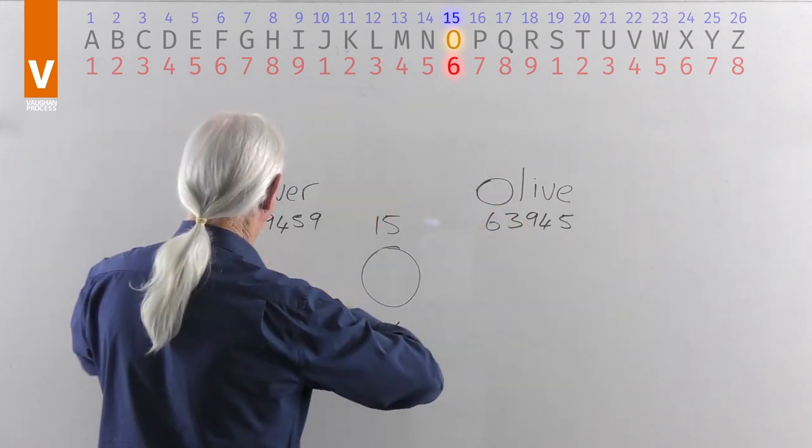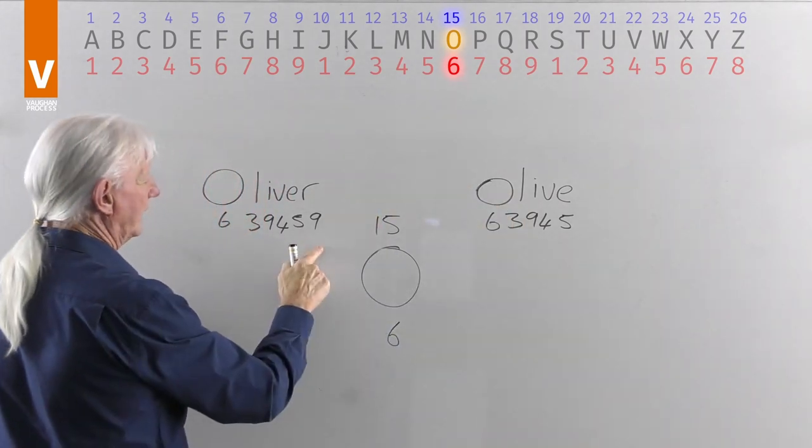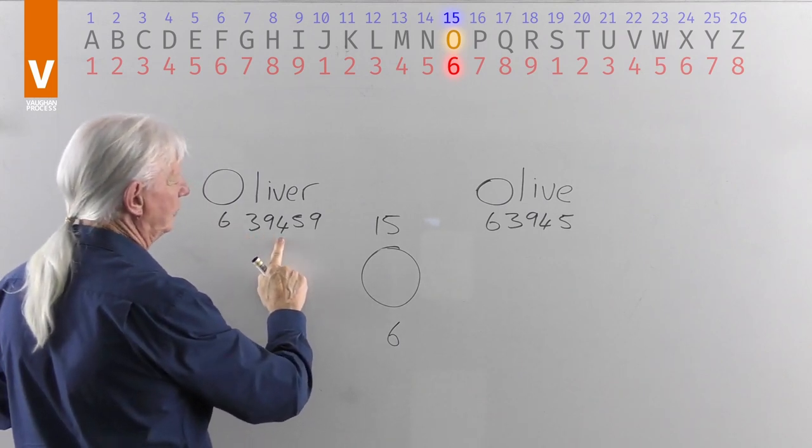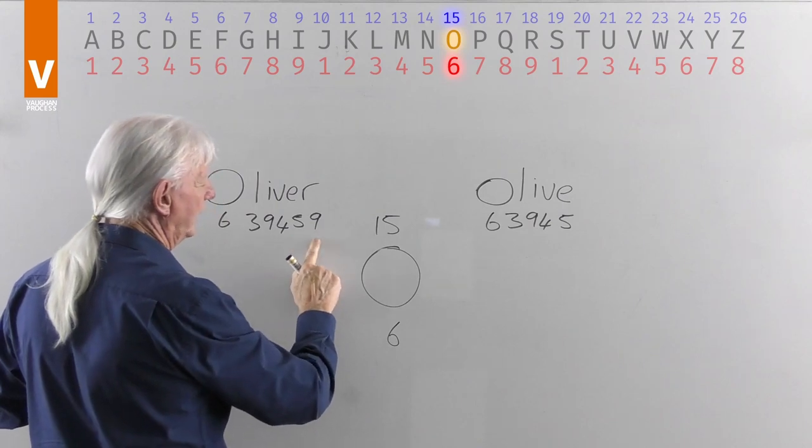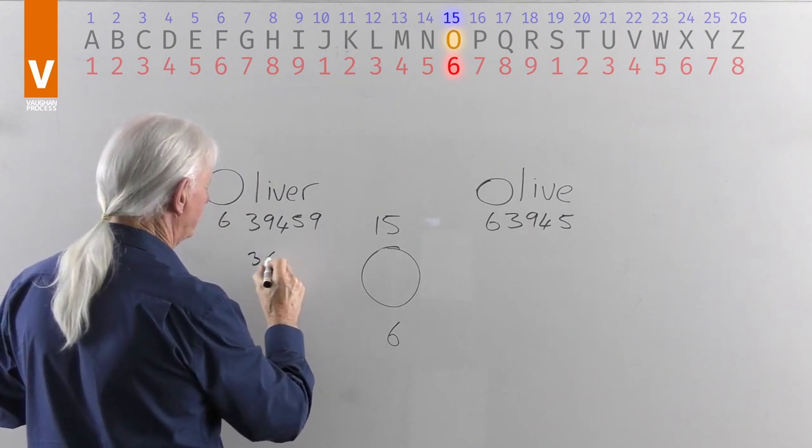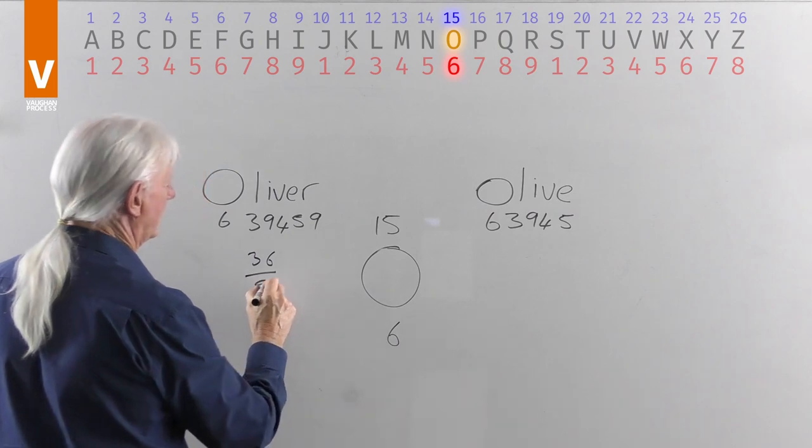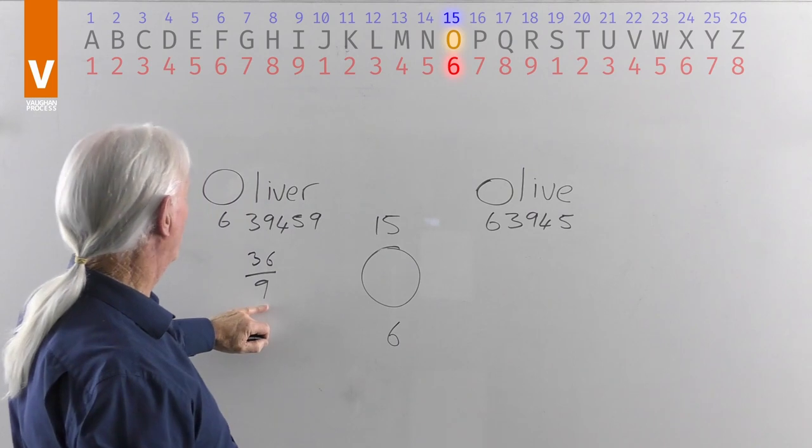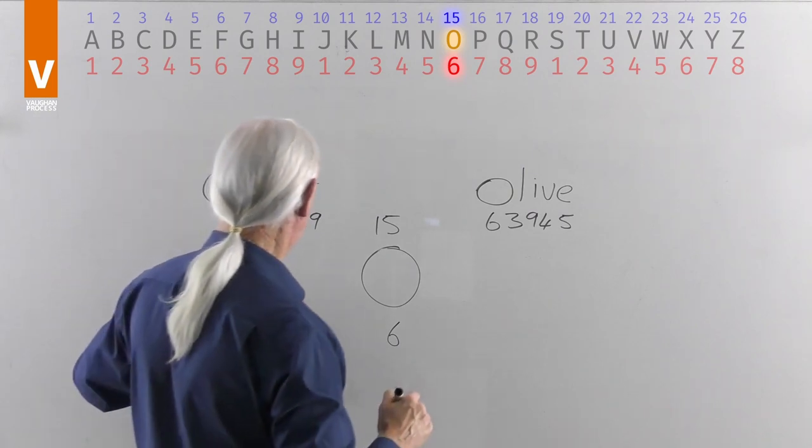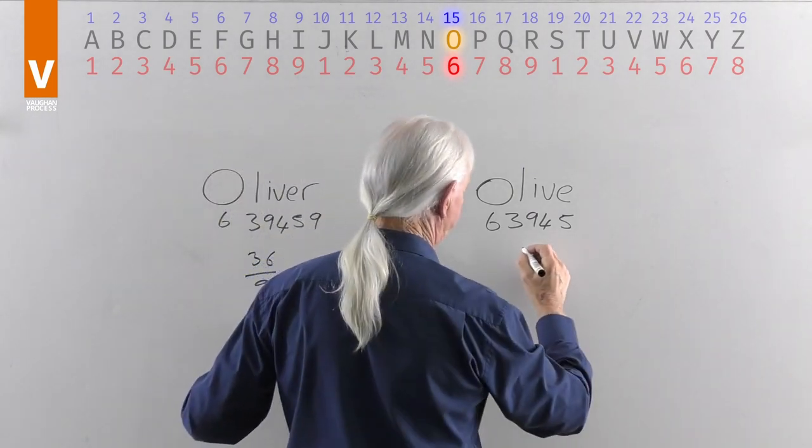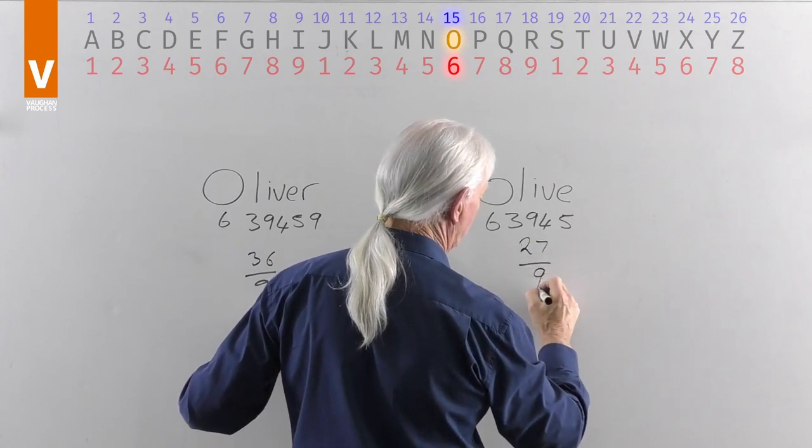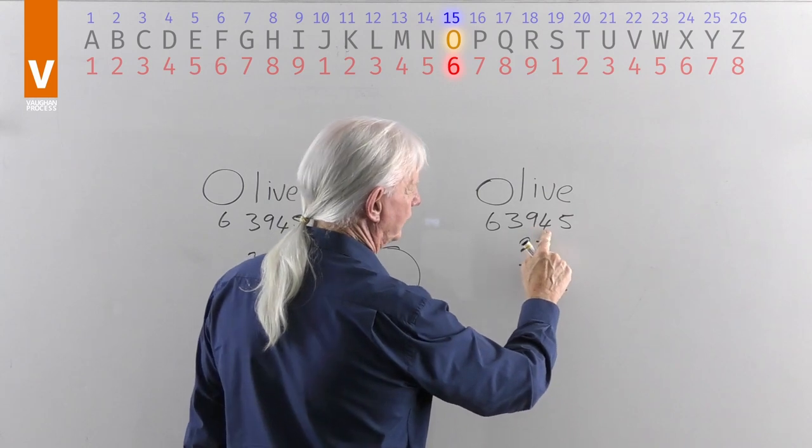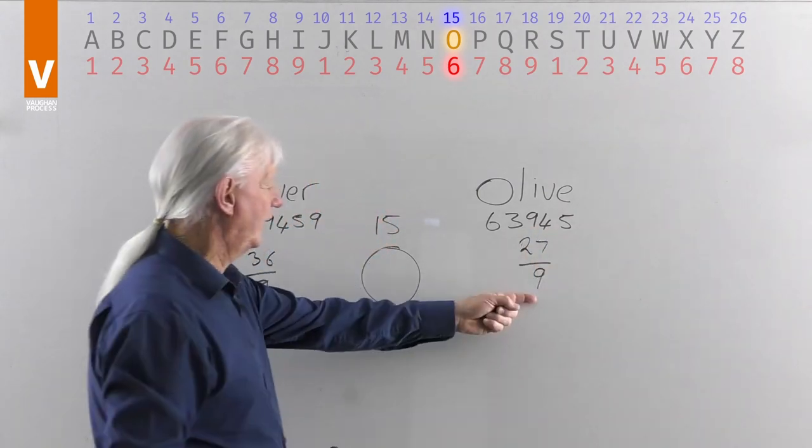I worry about Oliver and Olive. Let's see what they add up to. Six and three is nine plus nine is 18 and four is 22 and five is 27 and nine is 36. All of it is everything but the nine. So if we take nine from 36, we will have, sorry, 27. Let's check. Six and three is nine, 18, 22, 27. So we've got the same number.